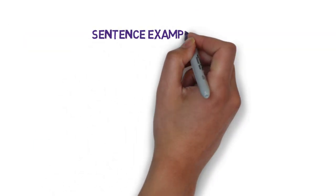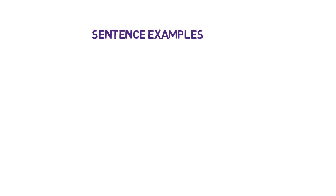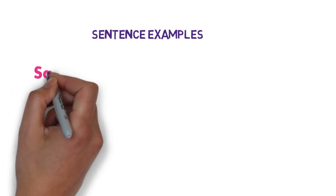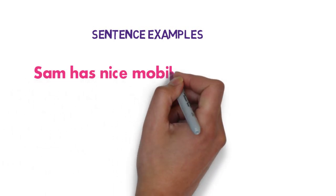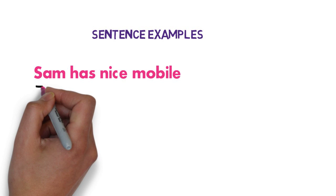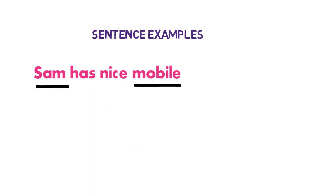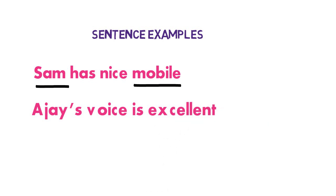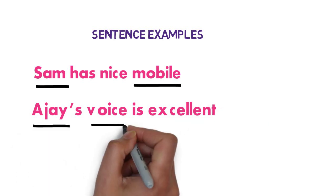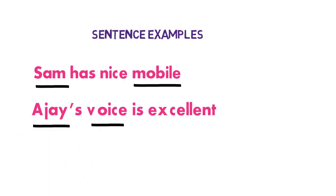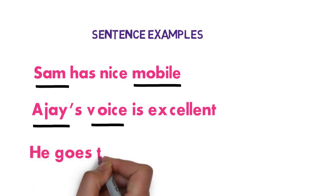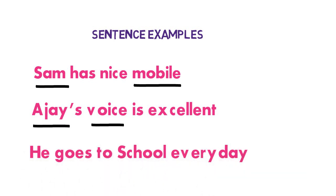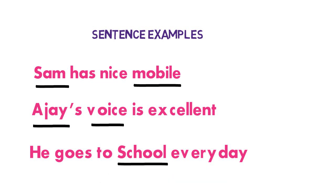Let's see sentence examples of the concrete nouns. First, Sam has a nice mobile — here Sam and mobile are concrete nouns. Ajay's voice is excellent — here Ajay and voice are concrete nouns. He goes to school every day — here school is a concrete noun.